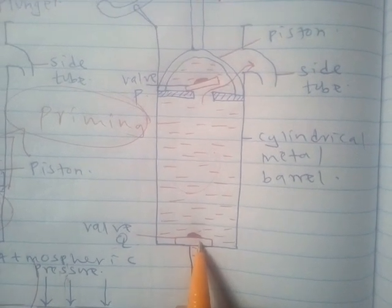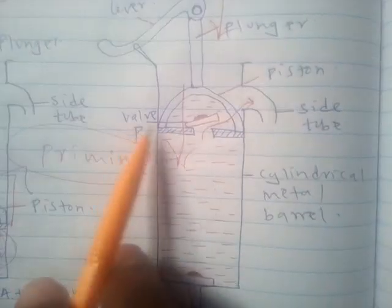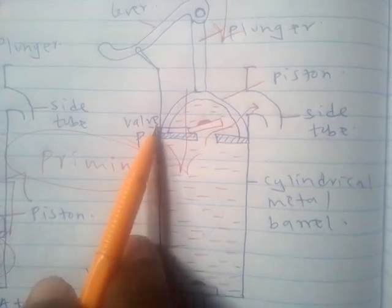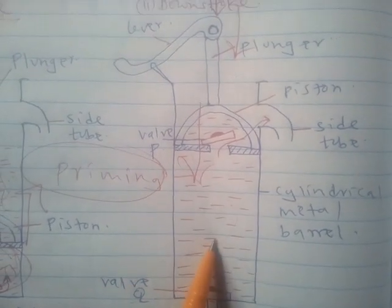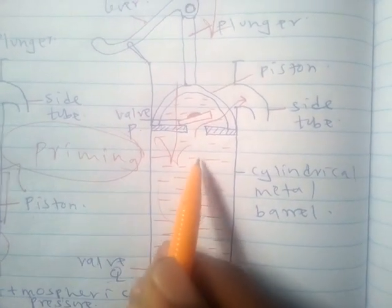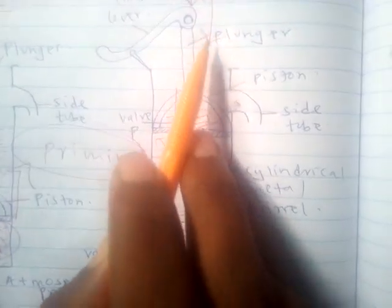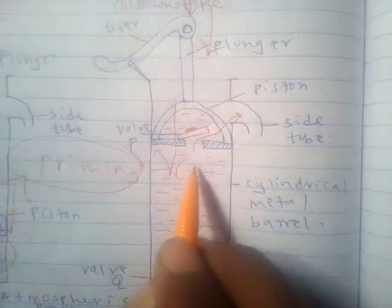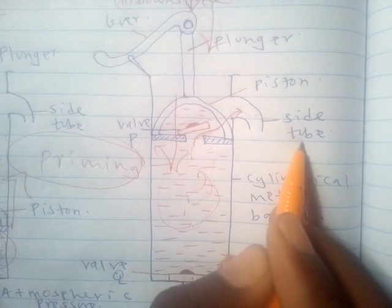Valve Q closes due to its own weight and the weight of the water above it. When the plunger is moved downwards, the piston compresses the water near valve Q. The pressure from this force on the water causes valve P to open up. When valve P opens, the pressure exerted by the piston on the water forces the water to move out and jet through the side tube.